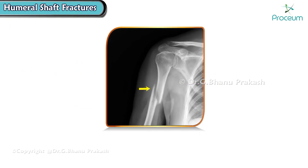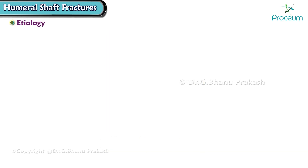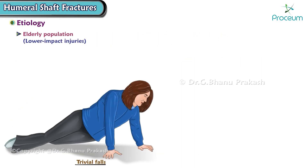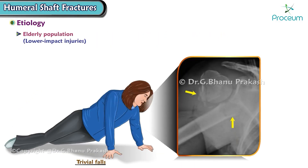Humeral shaft fractures can result from various causes and are common among different age groups. In the younger population, high-energy trauma such as that seen in motor vehicle accidents or contact sports often leads to these fractures. In contrast, in the elderly population, lower-impact injuries such as those resulting from trivial falls can cause these fractures.